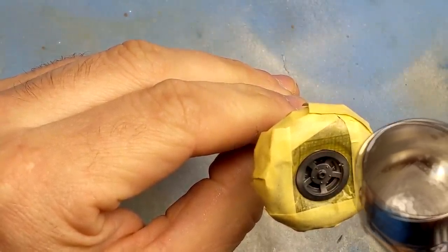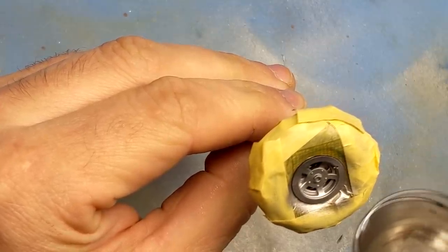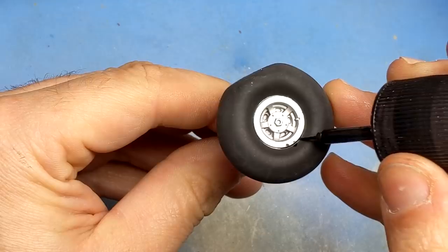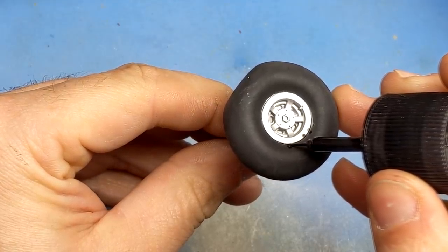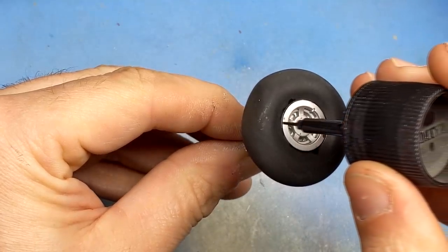With the rubber textures masked off it was a simple case of coming in with Mr. Color aluminum to spray the hub. To bring out the detail on the hub I'm going to use Tamiya panel liner just to bring out all those little things that you don't see when it's all silver.